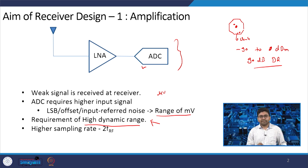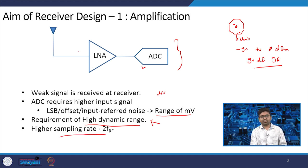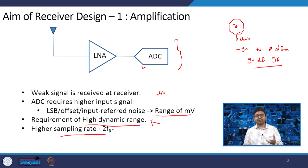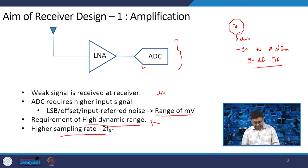Another limitation of a simple LNA-plus-ADC architecture is the sampling rate. The ADC is receiving a very high frequency signal at omega RF, which requires a much higher sampling rate. So this simple architecture is not sufficient — amplification alone is not enough — and we move to the second aim of receiver design.